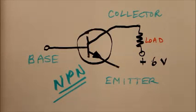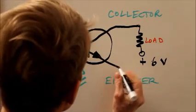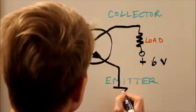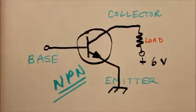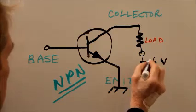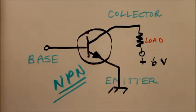The emitter would be connected to what we call a chassis ground. This positive voltage with respect to that ground. So if we had a battery, for example,